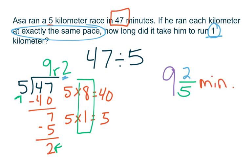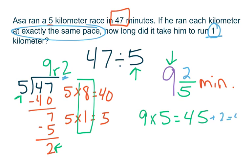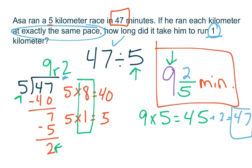Now I can check my work with multiplication very easily. I'm going to multiply my 9 times my divisor of 5. Nine times 5 is 45, and then I add my remainder of 2, and that gives me 47, which is exactly what I started with as my dividend. So I can be confident that my answer of 9 and 2 fifths minutes is correct for how long it took Asa to run each kilometer.